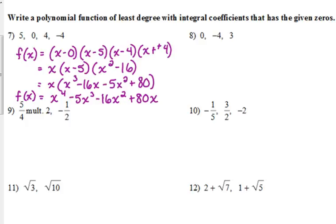Let's look at number 8. 0, negative 4, and 3. So same deal. It's just a little bit easier because we only have three zeros. So that means this is going to be a cubic function. So when 0 is one of our zeros, that means we have just x. Negative 4 as a factor is x plus 4. 3 as a factor is x minus 3.